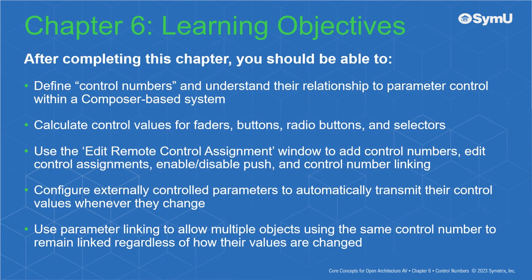The learning objectives for this chapter are: to define control numbers and understand their relationship to parameter control within a Composer-based system; calculate control values for faders, buttons, radio buttons, and selectors; use the Edit Remote Control Assignment window to add control numbers, edit control assignments, enable or disable push, and control number linking; configure externally controlled parameters to automatically transmit their control values whenever they change; and use parameter linking to allow multiple objects using the same control number to remain linked regardless of how their values are changed.